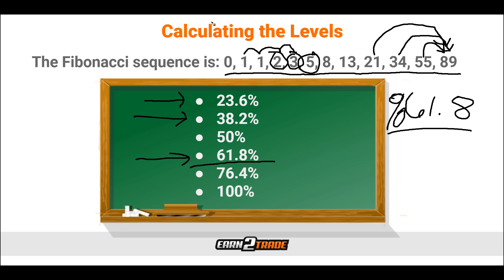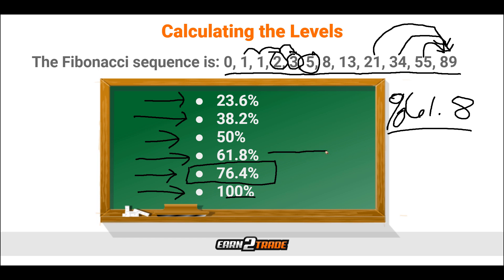Going by that logic, continuing down gives us 100, and dividing one by two gives us our 50% ratio. To get our 76.4, we subtract our 23.6% from 100, which gives us our final retracement level of 76.4. This is arguably one of the less used Fibonacci retracement levels, but it is still worth noting. The important level if you are just getting into the Fibonacci retracement world — the number one level to pay attention to in my mind is going to be the 61.8, our golden ratio.